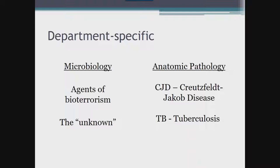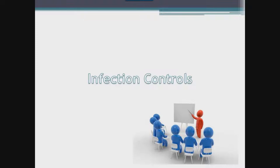Frozen sections and autopsies introduce exposure to tissue in its fresh state, and therefore risk is higher when performing these procedures. I wanted to mention CJD specifically for awareness, because the safety precautions associated with this agent are extensive — beyond the scope of this presentation — but you should familiarize yourself with those policies and procedures in your laboratory. After going through the types of exposure risks that exist, it is comforting to know we can minimize these risks with a number of different infection controls. These controls are only as good as everyone's compliance, so it is important that staff follow the processes set out for them.